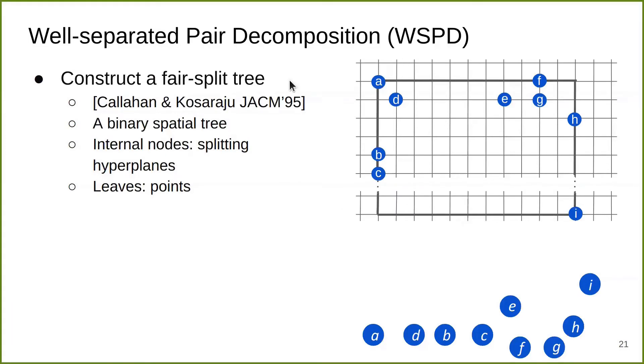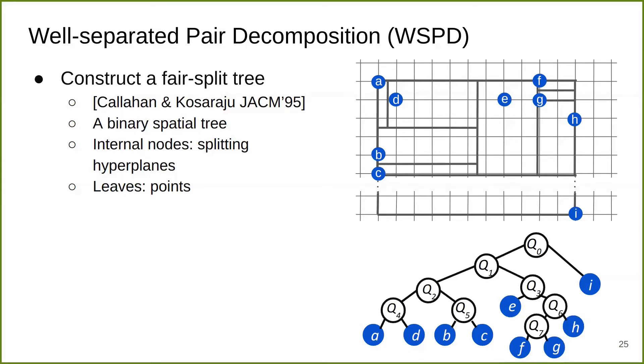To construct a WSPD, we first need to construct a spatial tree, which we call a fair split tree. This was first proposed by Callahan and Kosaraju in 1995. It is a binary spatial tree where each internal node is a split in hyperplane and each leaf is a point or input object. We visualize the example on the right. We have all these points on the 2D plane with a bounding box surrounding them. To construct the tree, we first divide the space exactly in half. This hyperplane becomes an internal node and its two children are the points in its left and right half respectively. Recursively and in parallel, we do the same thing for the children until every child is a leaf.